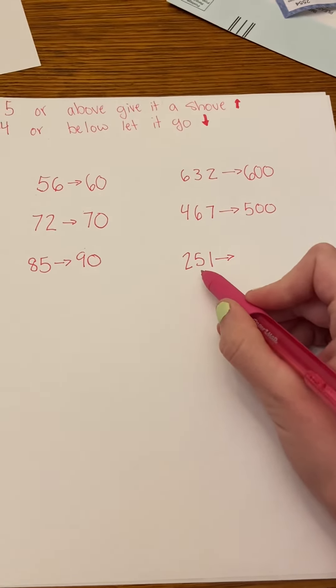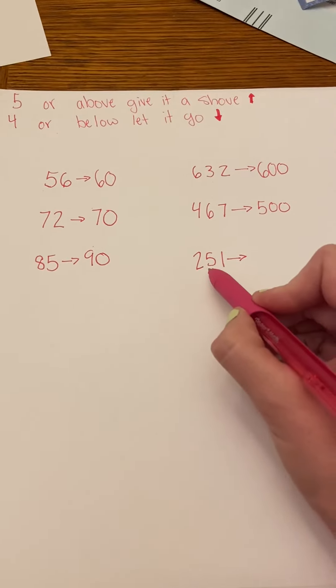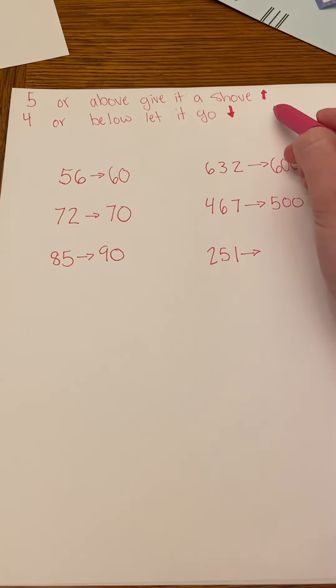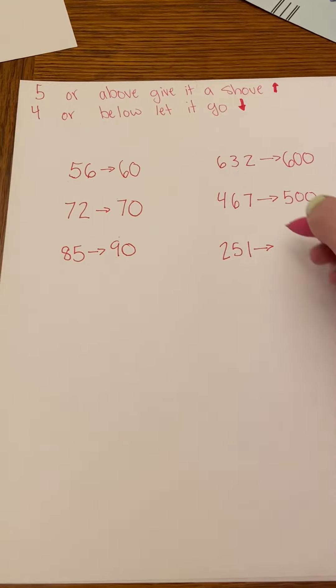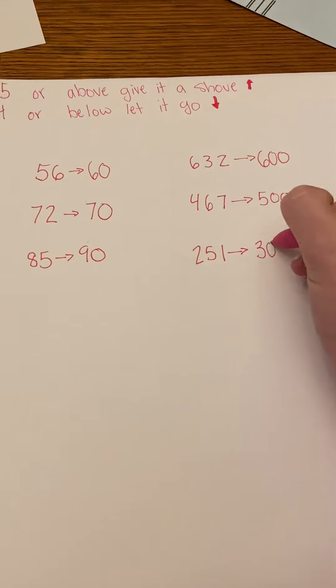And then again, I have a little tricky one, 251. So the five is right in the middle. But I know if it's five or above, I'm going to go up. So I'm going to round 251 to 300.